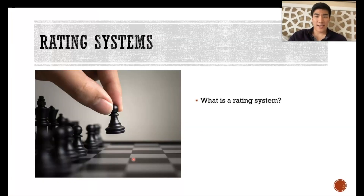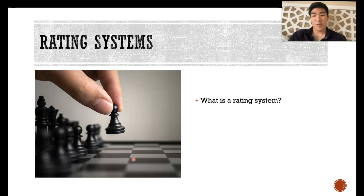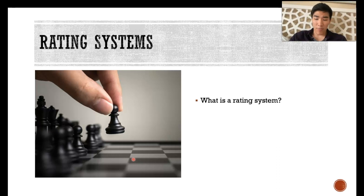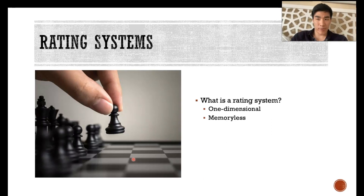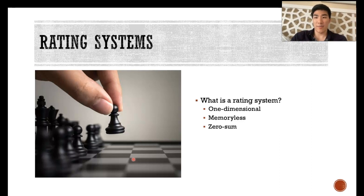We'll start off by discussing what exactly a rating system is. A rating system is a set of functions used to give and adjust real number ratings associated with players in competitive games. These ratings are used to rank players, with higher ratings being better, and to predict the outcome of match results. Our model specifically considers ratings that are one-dimensional, meaning they only consider one rating parameter; two, memoryless, which means they don't consider any other rating statistics, for example a win-loss percentage; and three, zero-sum, meaning that rating gained by one player corresponds to rating loss by another player.